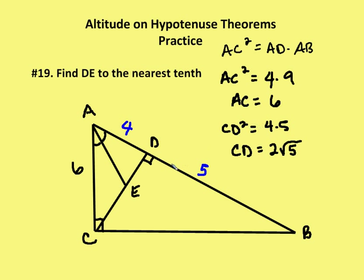Now we're going to find CD. CD squared is going to be equal to four times five, so CD is going to be equal to the square root of 20, or two root five. So I was able to find out what AC is given AD and DB, and given AD and DB I'm also able to find out what CD is. I don't need to find CB in order to determine what DE, or x, is.